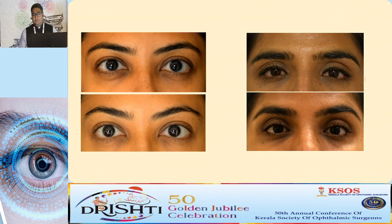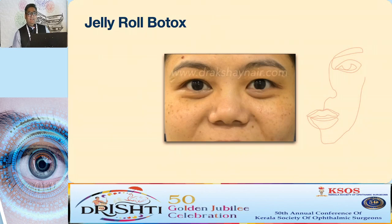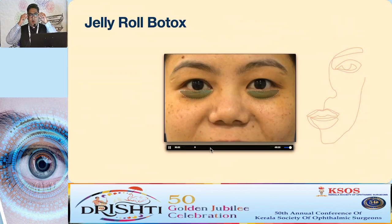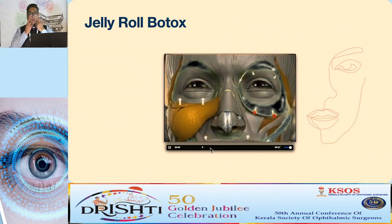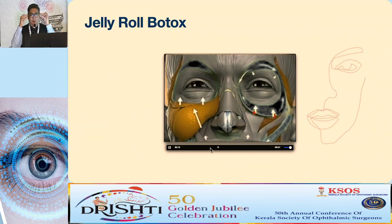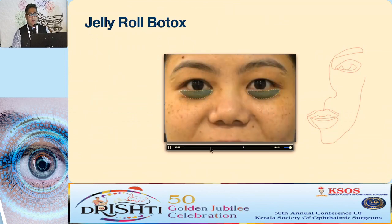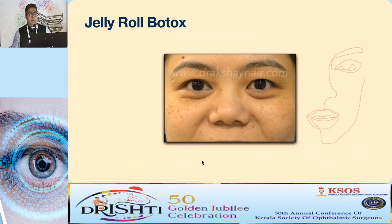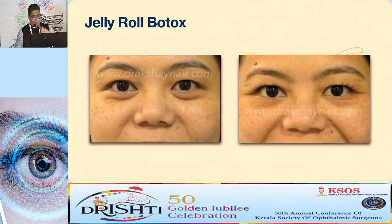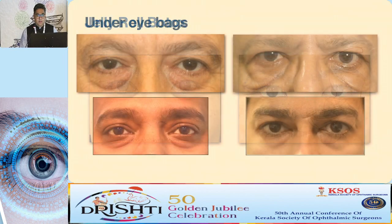In many patients who smile, their eyes become small due to a small belly of orbicularis that accumulates under the eyelid when facial muscles move upward during smiling. Injecting 5 units of Botox into the pretarsal orbicularis works very well. These patients go from having a jelly roll under the eye to not having it — completely changing facial appearance. Many patients become self-conscious that their eyes look small when smiling.